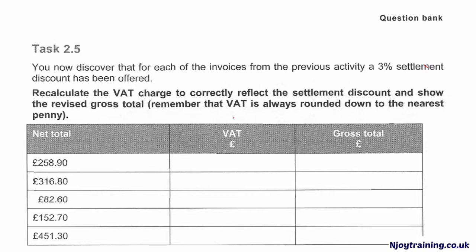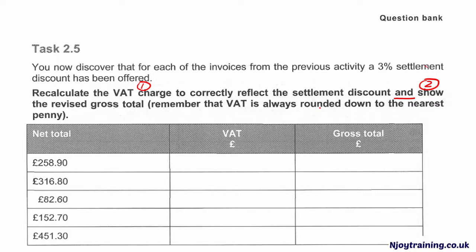This is Task 2.5 in the BPP Revision Kit of AAT Processing Bookkeeping Transactions. First, we need to look at the requirements. It asks you to calculate the VAT to reflect the settlement discount — and that 'and' is the very important word — and show the gross amount after the newly calculated VAT. It also says the VAT needs to be rounded down. I always number my requirements to make sure I wouldn't miss any.